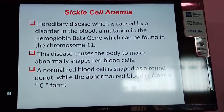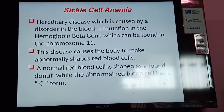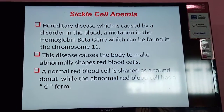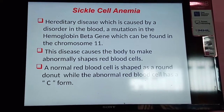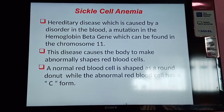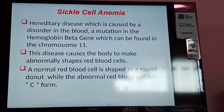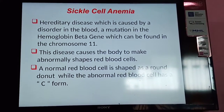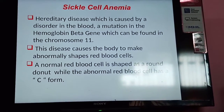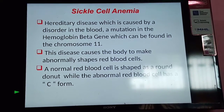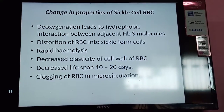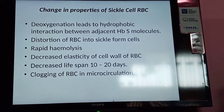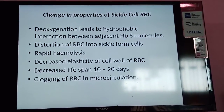Next is sickle cell anemia, a hemolytic anemia in which RBCs undergo hemolysis and take on a sickle or crescent form. It is a hereditary disease caused by a mutation in the hemoglobin beta gene, found on chromosome 11. The disease causes abnormally shaped RBCs — a normal RBC is round like a donut, while the abnormal one has a C-shaped or crescent form. Deoxygenation leads to hydrophobic interactions between adjacent HbS molecules and distortion of RBCs into the sickle form.